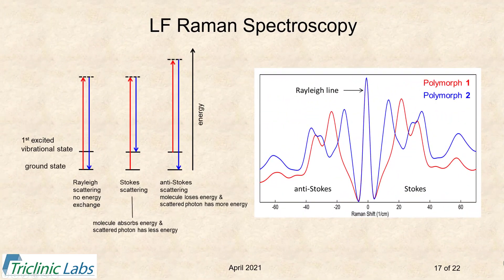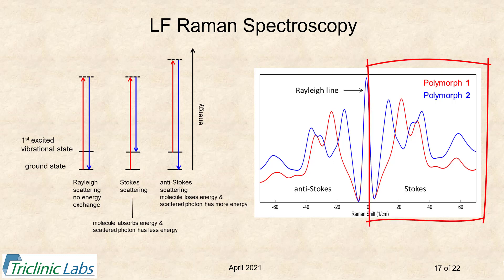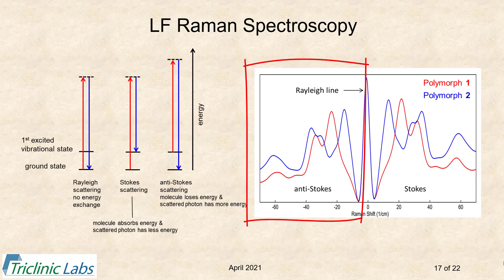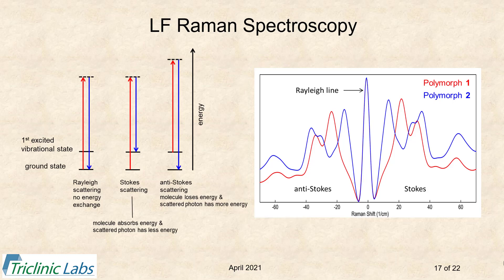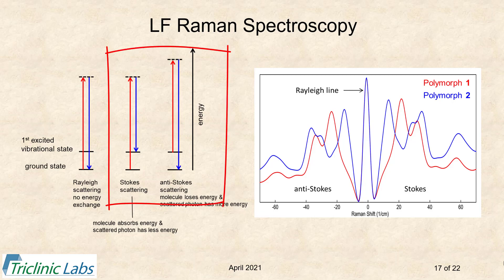Here are low-frequency Raman spectra of polymorphs one and two. There are two modes of scattering detected in low-frequency Raman spectroscopy: Stokes and anti-Stokes. The spectra obtained show both modes. The Stokes signals are to the right of the Rayleigh line and the anti-Stokes signals to the left. The anti-Stokes signals are always somewhat less intense than the Stokes signals because they arise from an excited vibrational state, which is less populated than the ground state.